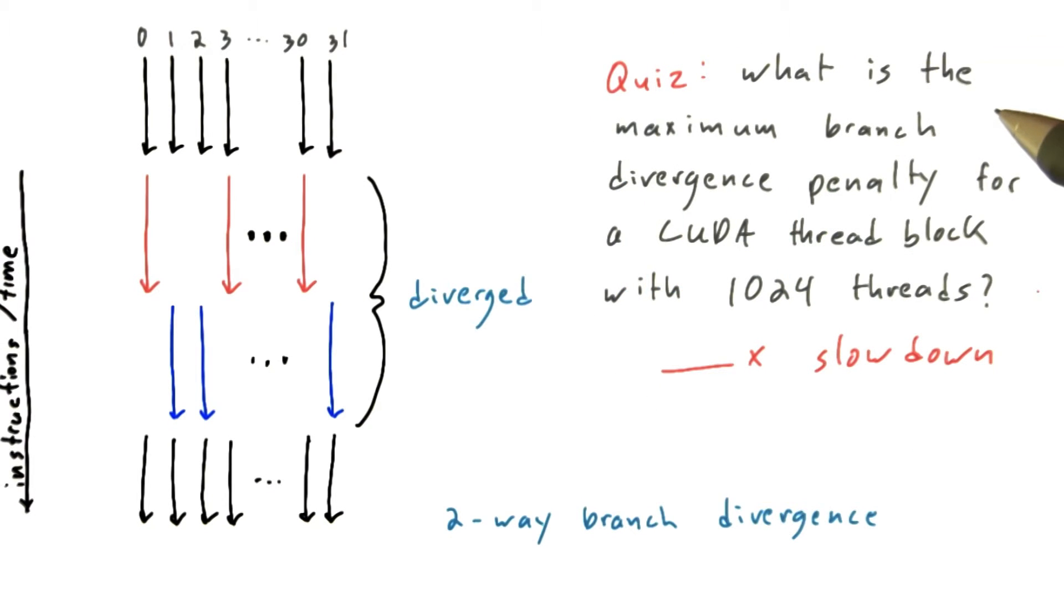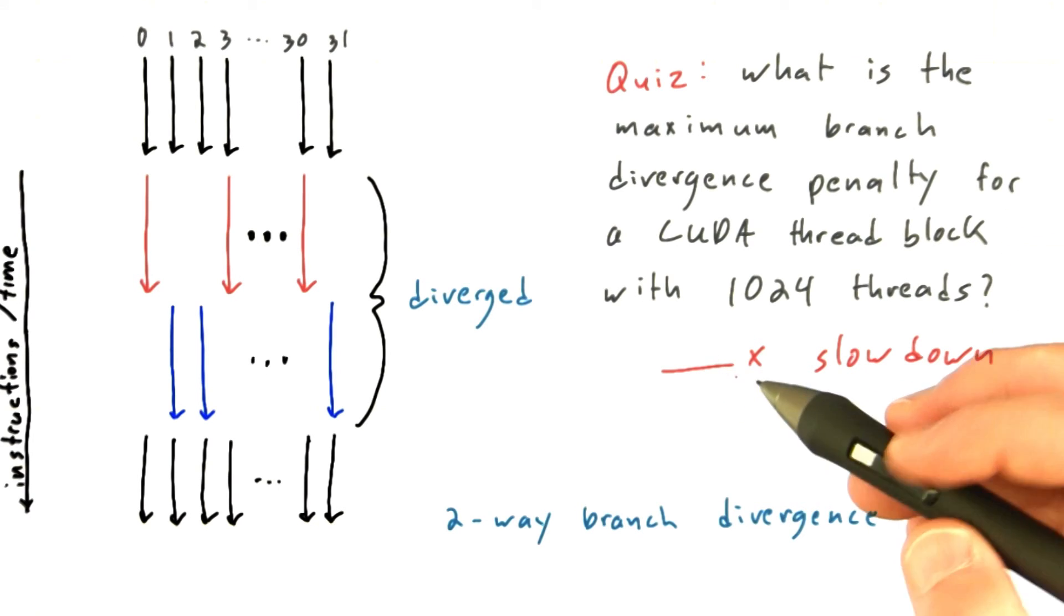So as a quiz, what is the maximum branch divergence penalty that a CUDA thread block with 1,024 threads could experience when executing a kernel? Is it a 2x slowdown, a 4x slowdown, or so forth?